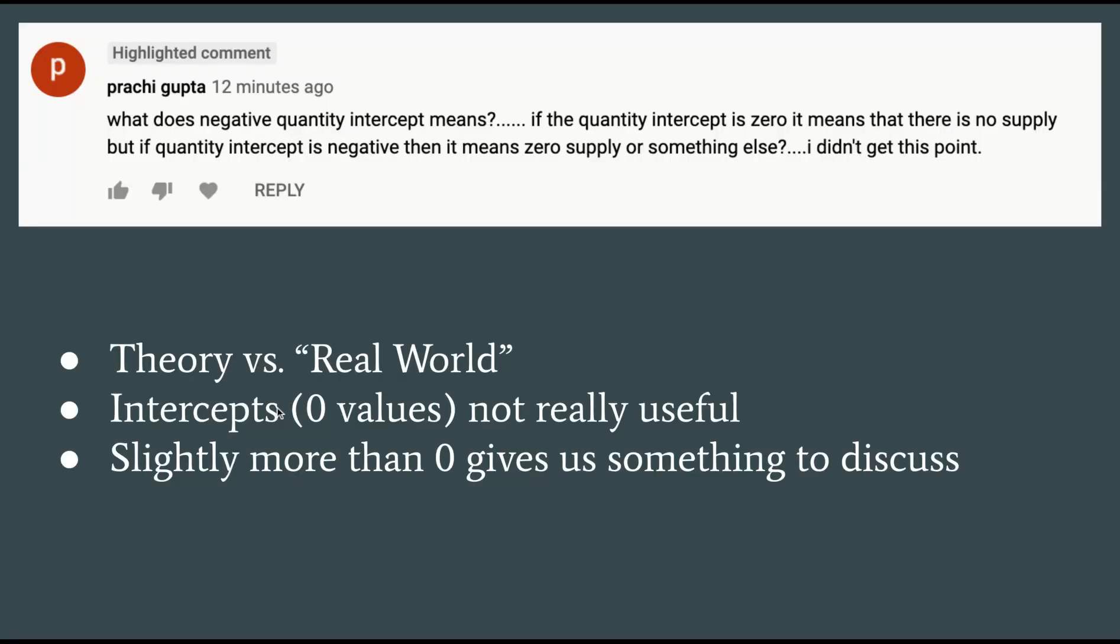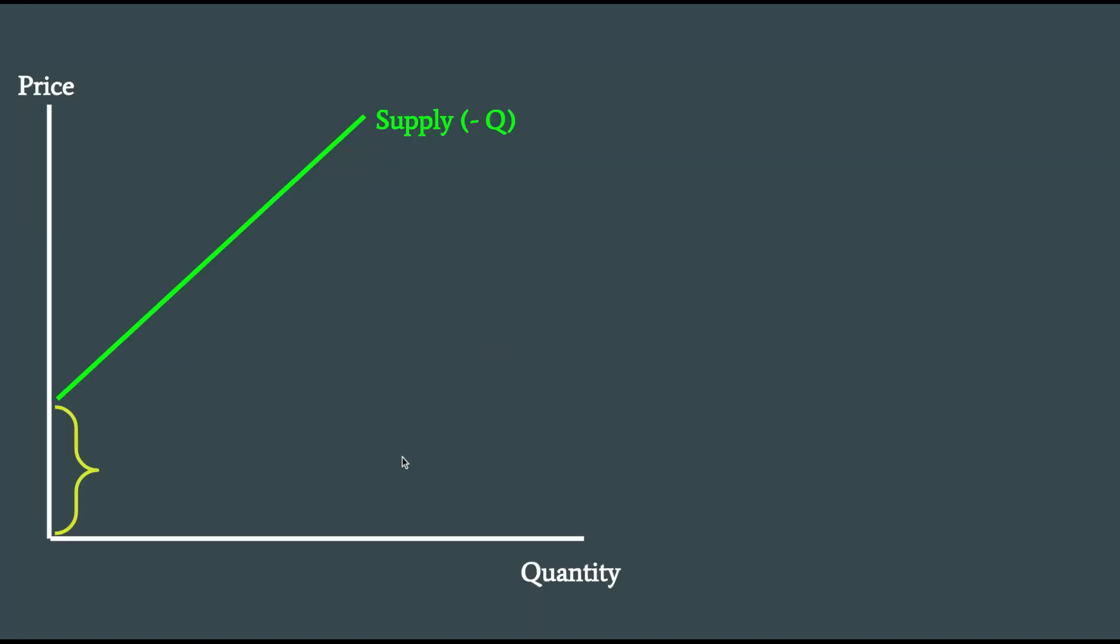And that's really why we do use different intercepts, is that if we start to talk about a little bit higher than zero price, or a little bit higher than zero quantity, we can discuss something a little bit more fully. So for example, here, what this probably represents is some amount of startup costs that have to be covered before we can supply any at all.